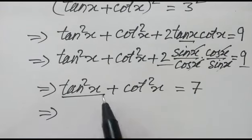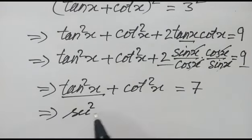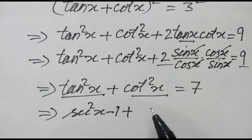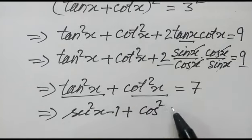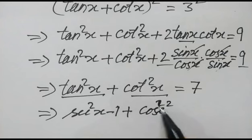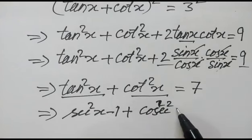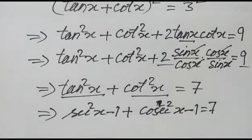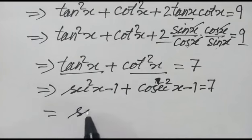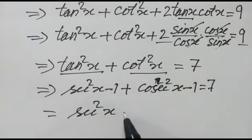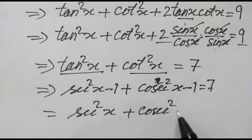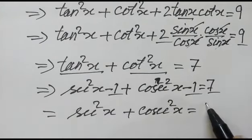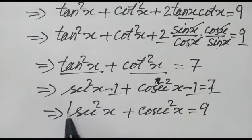Now tan square x is sec square x minus 1, and cot square x is cosec square x minus 1. So sec square x minus 1 plus cosec square x minus 1 equals 7, which gives sec square x plus cosec square x equals 9. This is our required result.